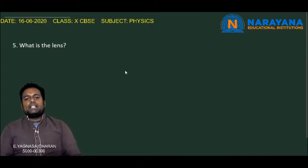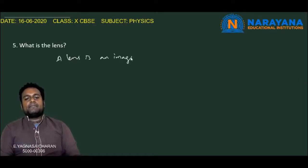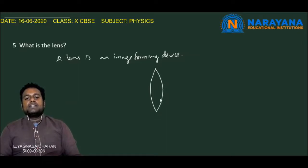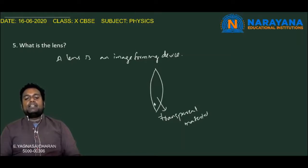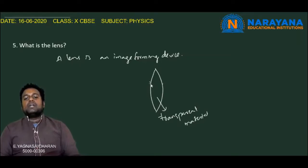The fifth question: What is a lens? A lens is an image-forming device made of a transparent material, like glass or polymeric plastic, bounded by two curved surfaces. Light gets refracted at these two curved boundaries, and the image is formed because of this refraction. So a lens is an image-forming device bounded by two curved surfaces, made of a transparent material, where image formation takes place after refraction.